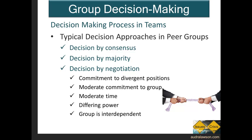There are several conditions for negotiation being useful and successful. First, members tend to be committed to divergent positions when the process begins. Second, they are moderately committed to the group itself. Third, there is a moderate amount of time for the decision-making process. Fourth, different members of the group can have different amounts of power. And fifth, the group's interdependence is sufficient to allow support for implementation.